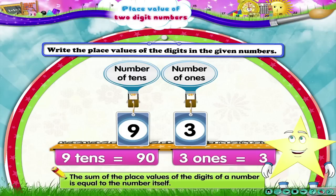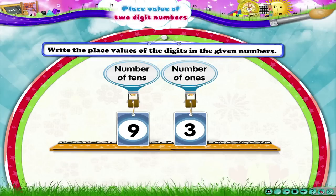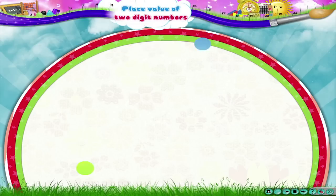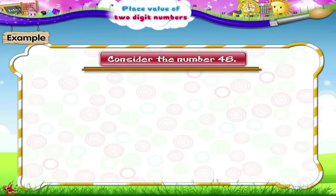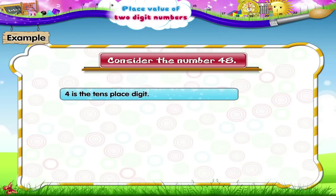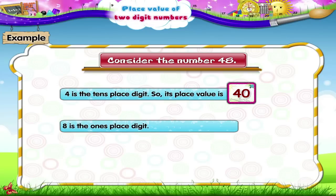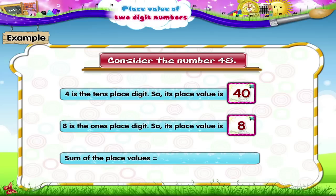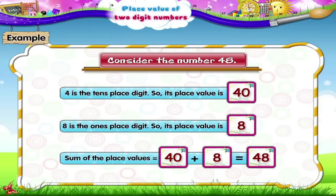Do you know the sum of the place values of the digits of a number is equal to the number itself? Look at this example. Consider the number 48. The digit 4 is in the tens place, so its place value is 40. The digit 8 is in the ones place, so its place value is 8. The sum of the place values is 40 plus 8, that is 48.